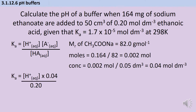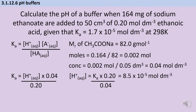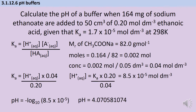Now I can go back to my Ka expression and substitute in the anion concentration of 0.04 and the acid concentration of 0.20, which was given in the question. Rearranging to make hydrogen ions the subject gives Ka × [acid] / [anion] = 1.7 × 10⁻⁵ × 0.20 / 0.04 = 8.5 × 10⁻⁵. Taking the negative log base 10 gives 4.070581..., and because this is a pH I always give it to two decimal places, so my final answer is 4.07.